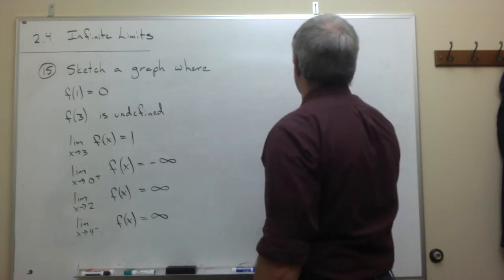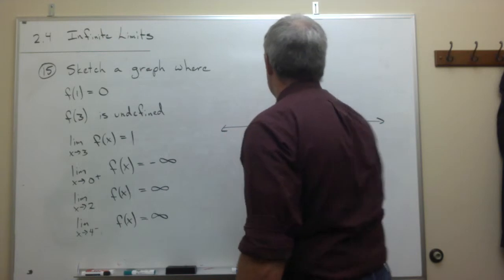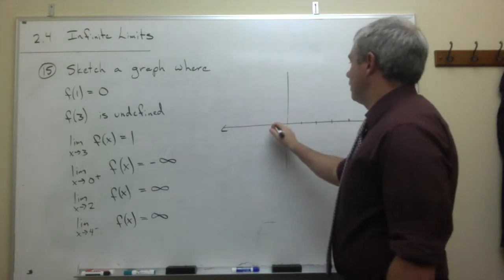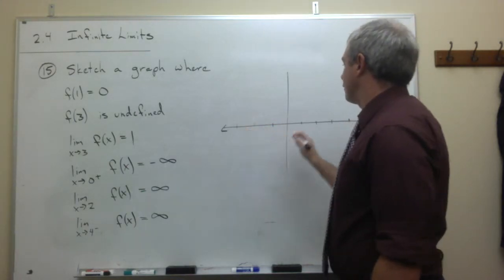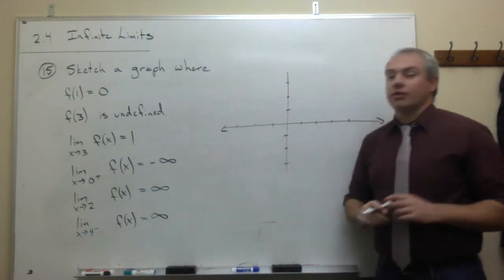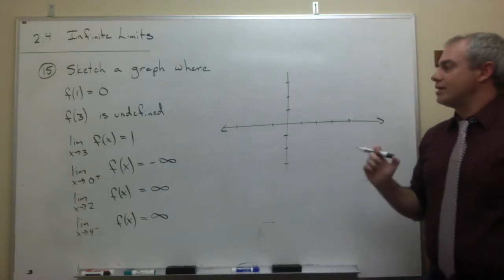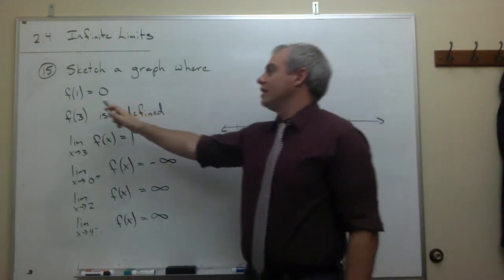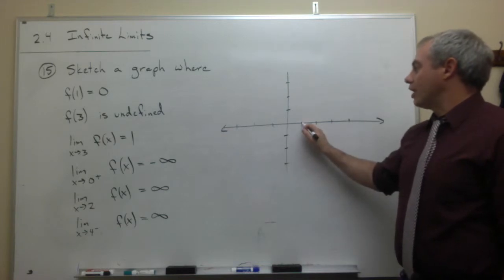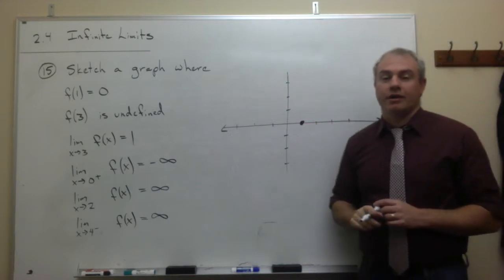So let me draw a graph. I'll put some marks on here for the x and y axes. The very first thing we know has to be true about our graph is that f(1) needs to be 0. That means at the point x = 1, the functional value is 0, so I'll go ahead and fill in a point right there.